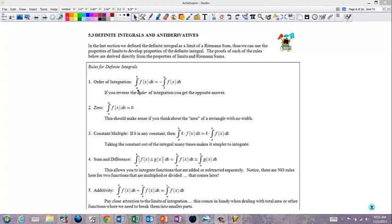First of all, the order of integration. The integral from A to B is the same as the opposite integral from B to A. If you reverse the order, you change the sum. The integral from A to A is 0, and it should make sense if you think about the area of a rectangle with no width. If you multiply by a number on the inside, you can pull it to the outside.